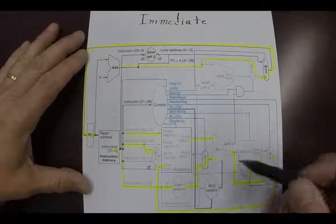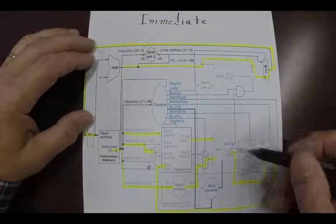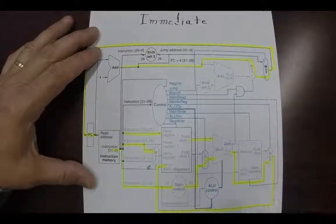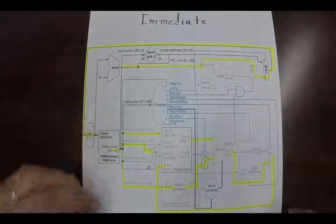Both the first register and the immediate field are sent to the arithmetic logic unit and that result is sent back to the write register. And the next instruction is calculated the same way.